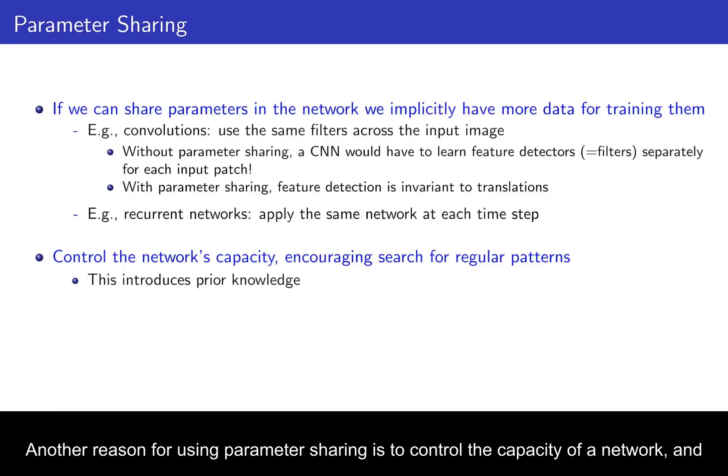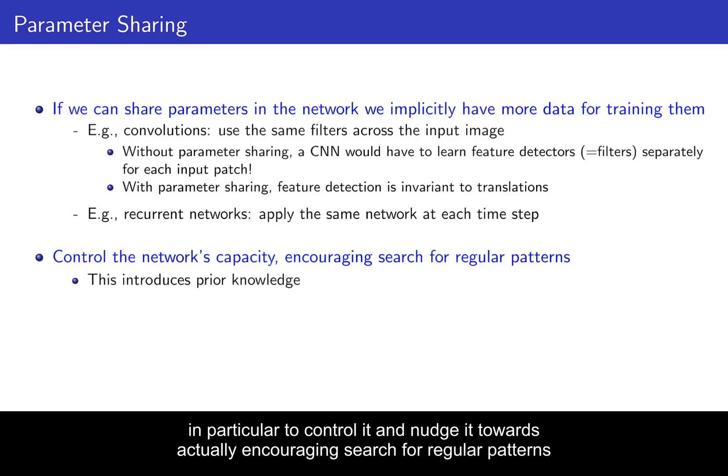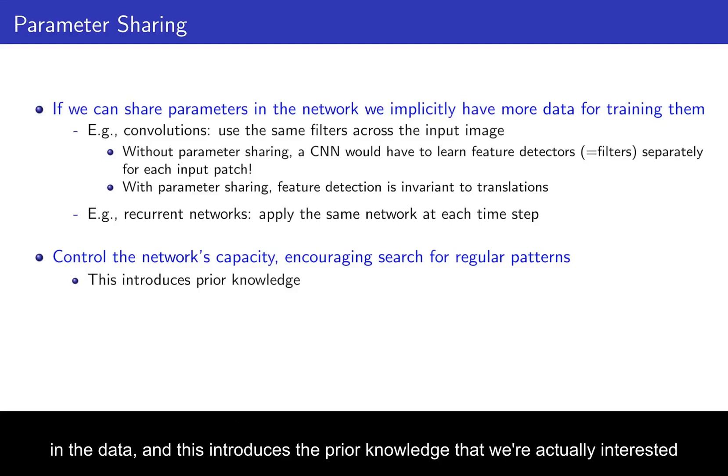Another reason for using parameter sharing is to control the capacity of a network, and in particular to control it and nudge it towards actually encouraging search for regular patterns in the data. And this introduces the prior knowledge that we're actually interested in these regular patterns.